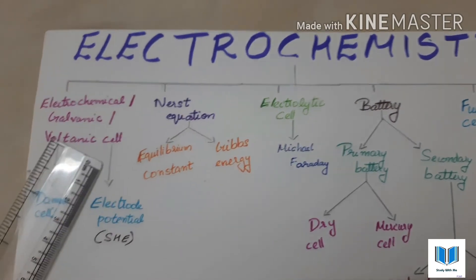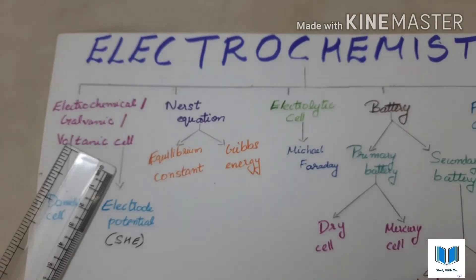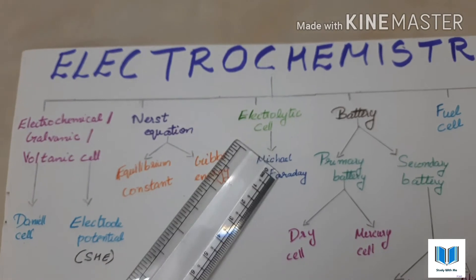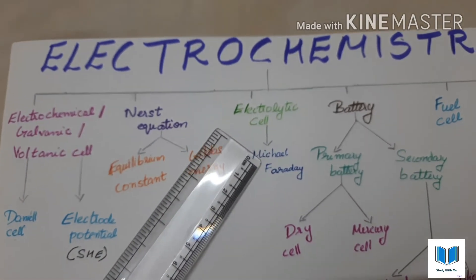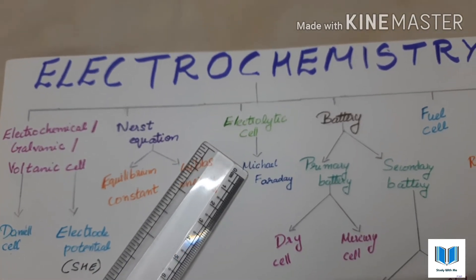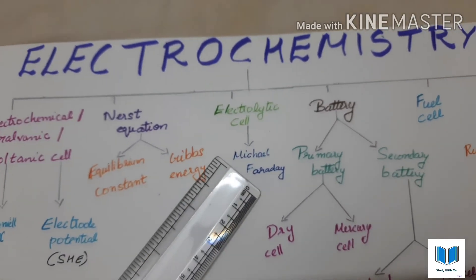Next topic is the electrolytic cell. The electrolytic cell is exactly opposite to the electrochemical cell. In the electrolytic cell, we have two laws given by Michael Faraday.